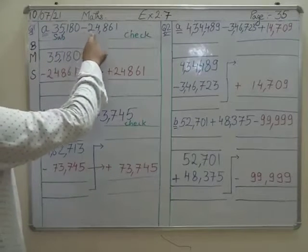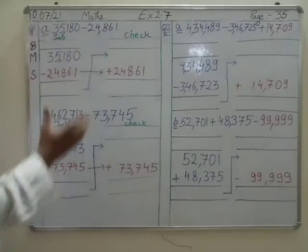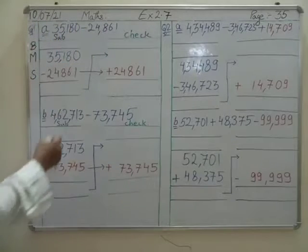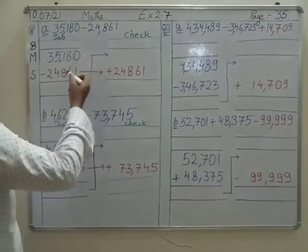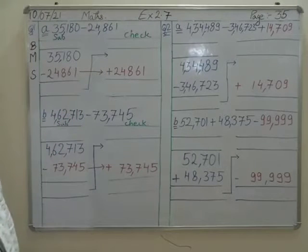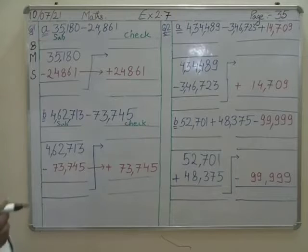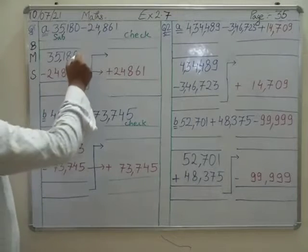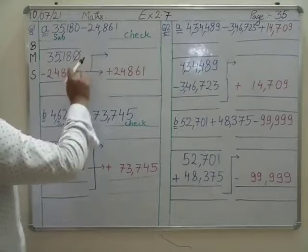So let's subtract: 0 minus 1. Can we subtract 1 from 0? No, we can't subtract 1 from 0. So we will take a borrow.